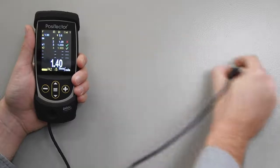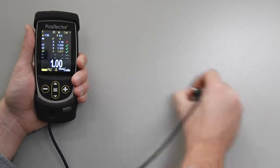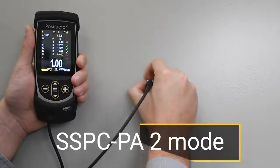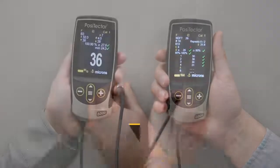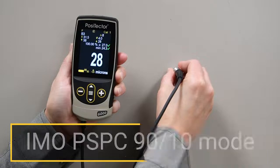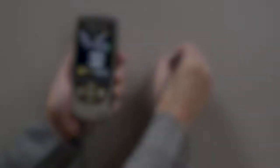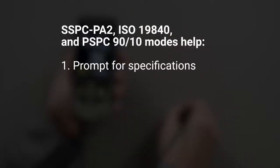PosiTector 6000 advanced gauges also feature several modes for conforming to standards, including SSPC-PA2, ISO-19840, and IMO-PSPC-9010.